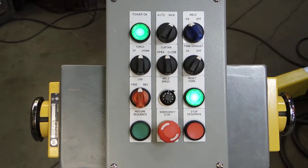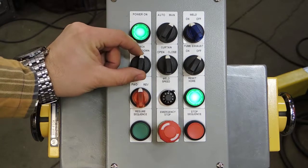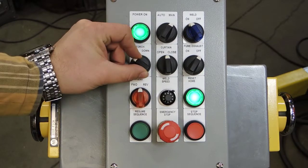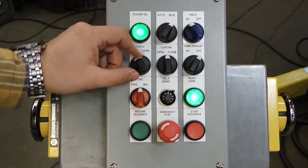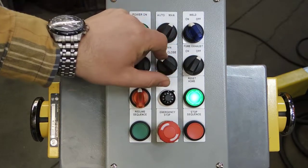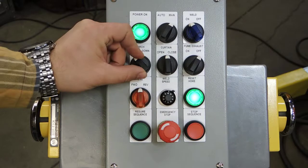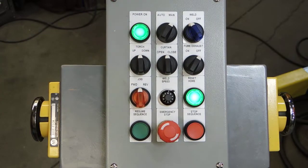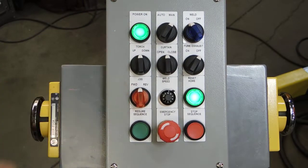In manual mode, the operator has the ability to rack the torch down or up, as well as close and open the curtain. We also have the ability to jog the machine forward and reverse.